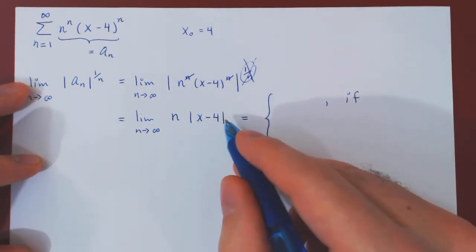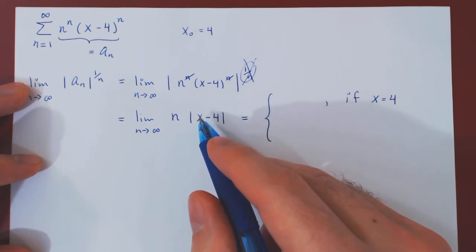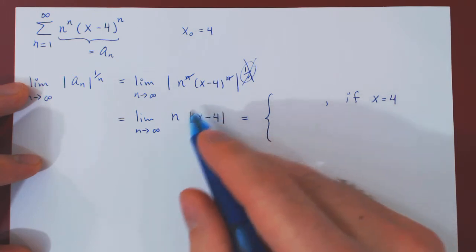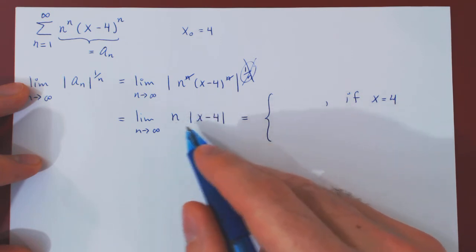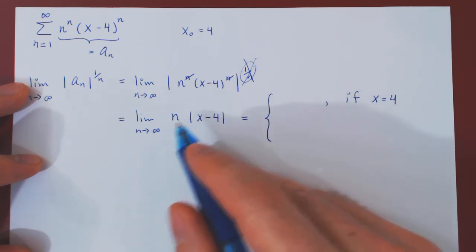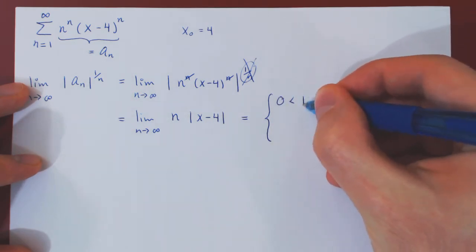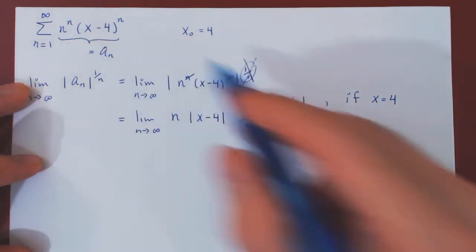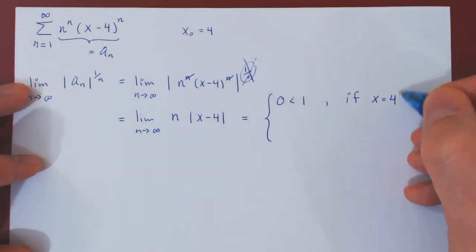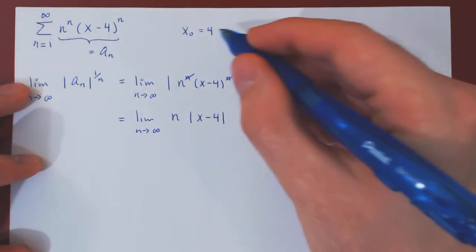So, this will be zero only if x equals 4. So if x is equal to 4, well this is the absolute value of zero, which is zero. Zero times n is zero, so we have a constant sequence zero. And as n tends to infinity, zero, of course, converges to zero, which is strictly less than 1. And so we will have convergence of the power series when x equals 4. This should not be surprising, as a power series will always converge at its center.